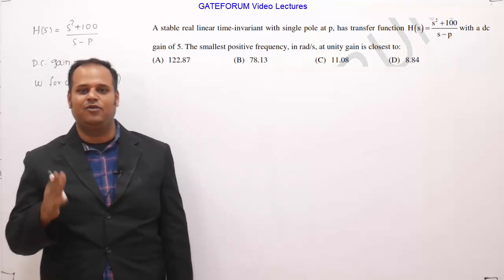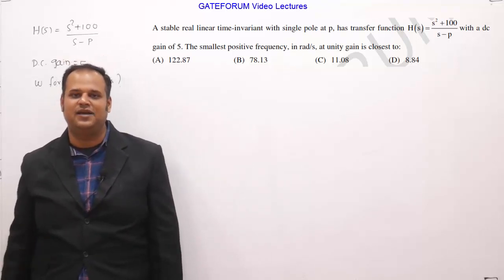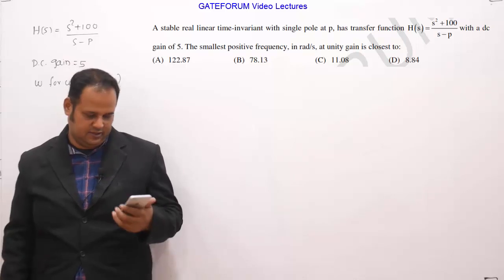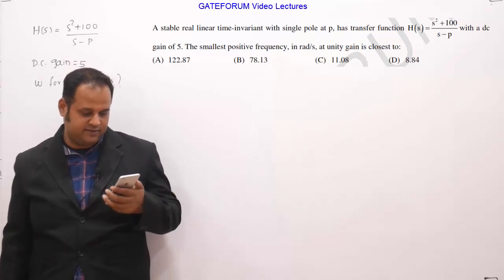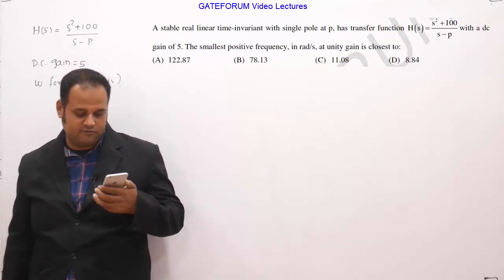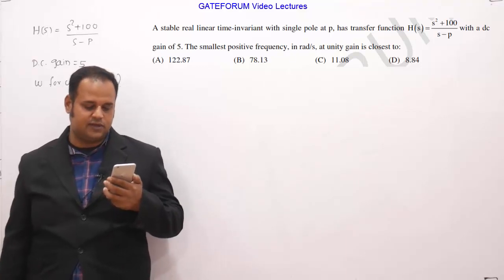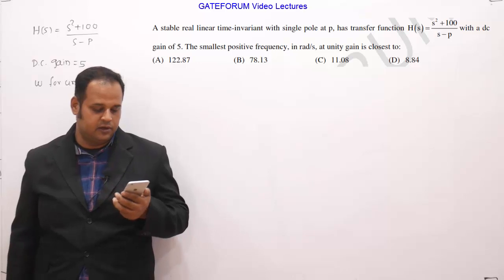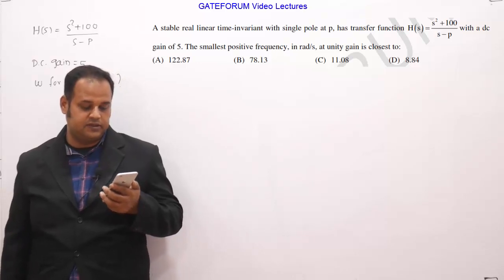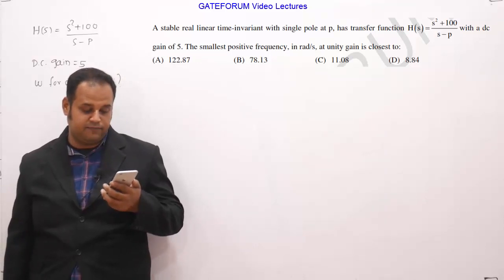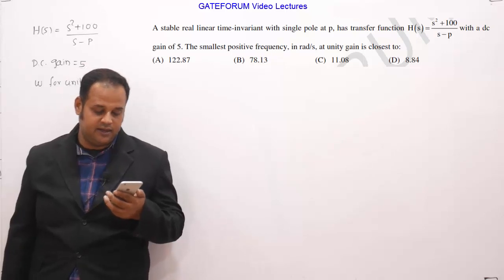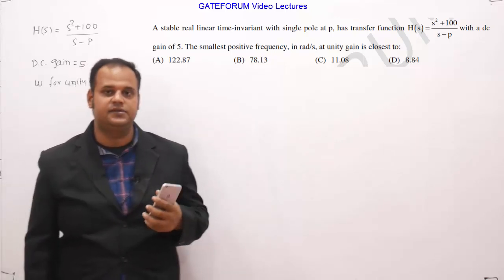This is a GATE 2020 Tuma questions from control systems and from basics part. The question is a stable real LTI system with single pole at p has transfer function h of s equals to s square plus 100 by s minus p with a DC gain of 5. The smallest positive frequency in radian per second at unity gain is close to some options are given.